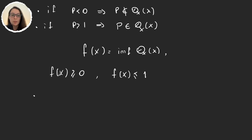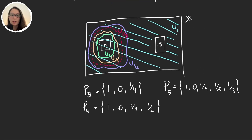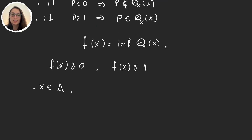Let's see what happens if we have x in A. If x is an element in A, then it's an element in U_0 — it's an element in basically any set — and so the infimum over all the rational numbers that are between 0 and 1 is 0. So if x is in A, this infimum is going to give us 0. This is exactly one of the things that we want.